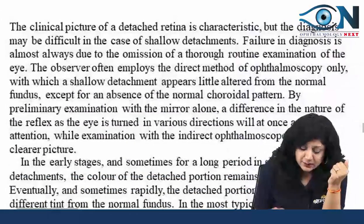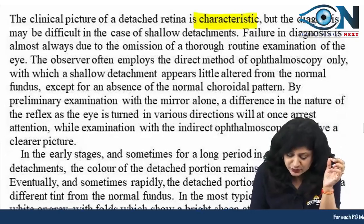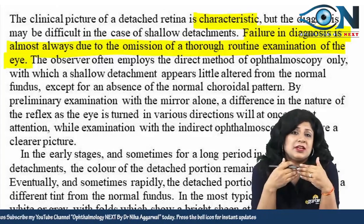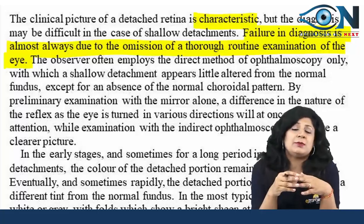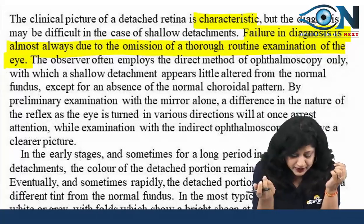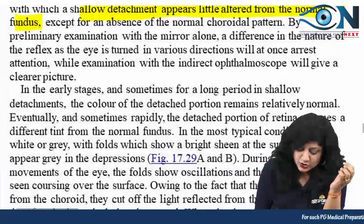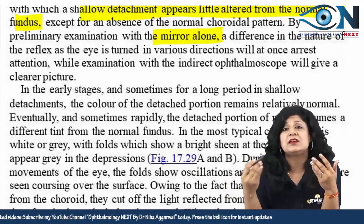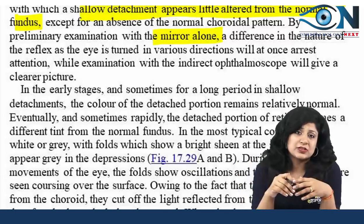Diagnosis can be difficult, especially in shallow detachments; failure is almost always due to omission of thorough examination. By distant direct ophthalmoscopy, a grayish reflex is seen instead of the normal red/orange reflex. Indirect ophthalmoscopy gives a clearer picture — allowing examination of the retinal periphery, contour of detachment, and identification of retinal holes.